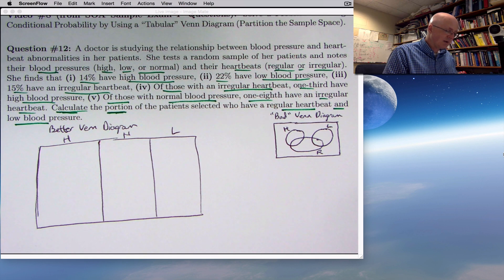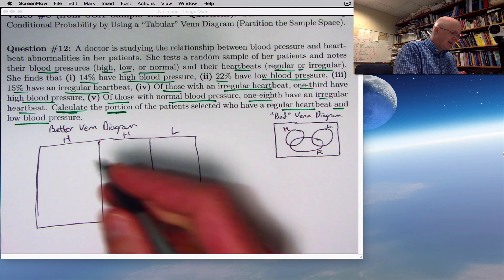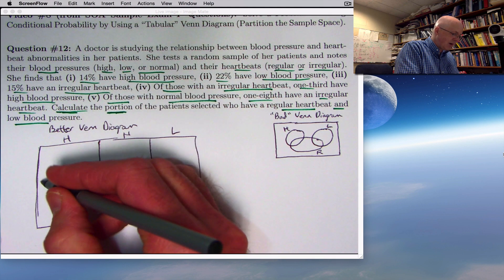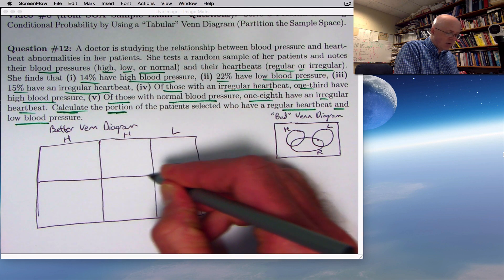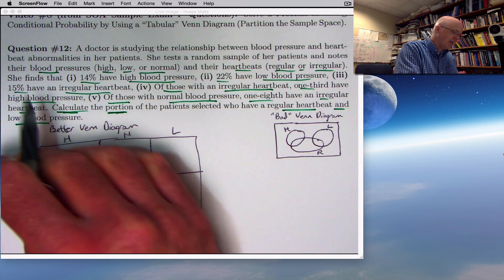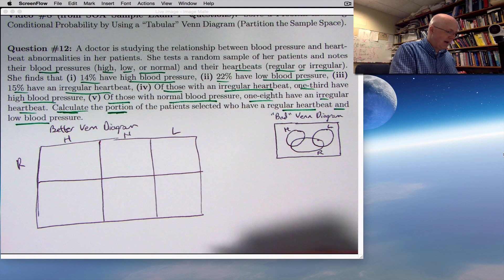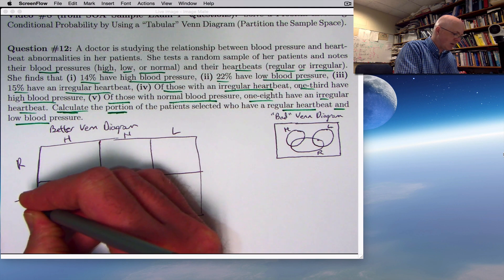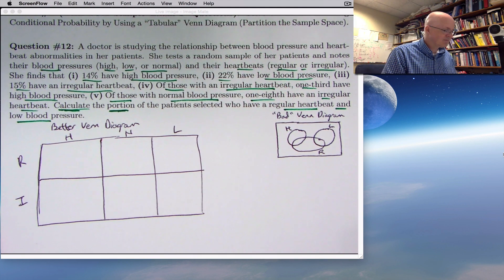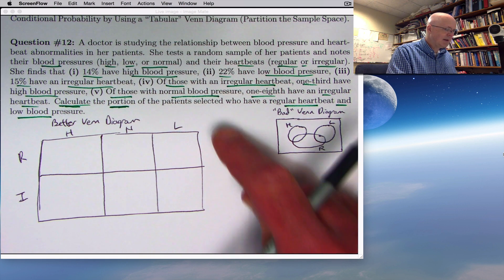And then as far as the heartbeats goes, there can be overlap, just like there was over here. And there's two conditions, either regular or irregular, making that a line going horizontal like this. Let's label this row as being the people who have a regular heartbeat. And this one is those who have an irregular heartbeat.